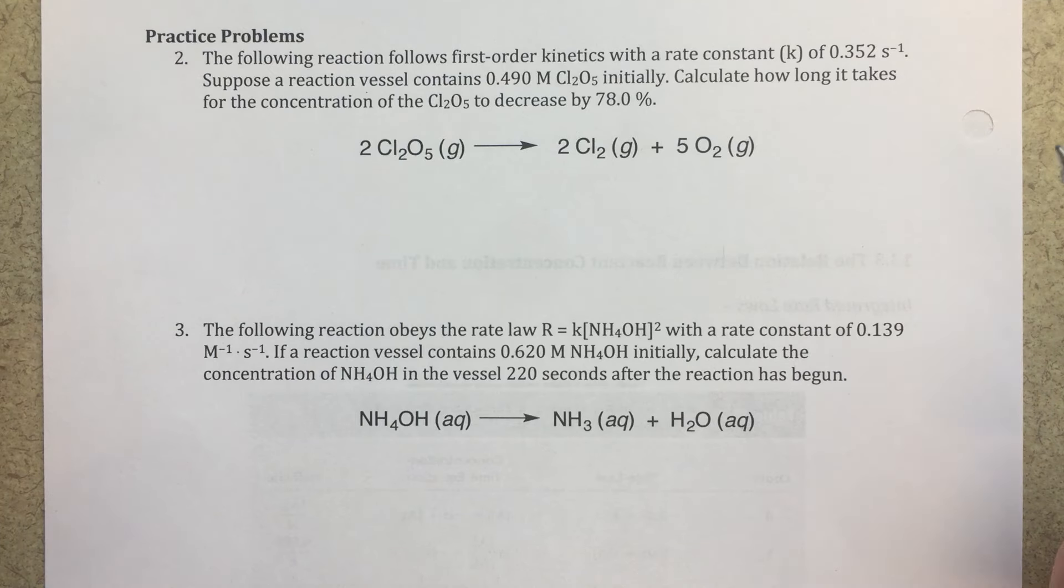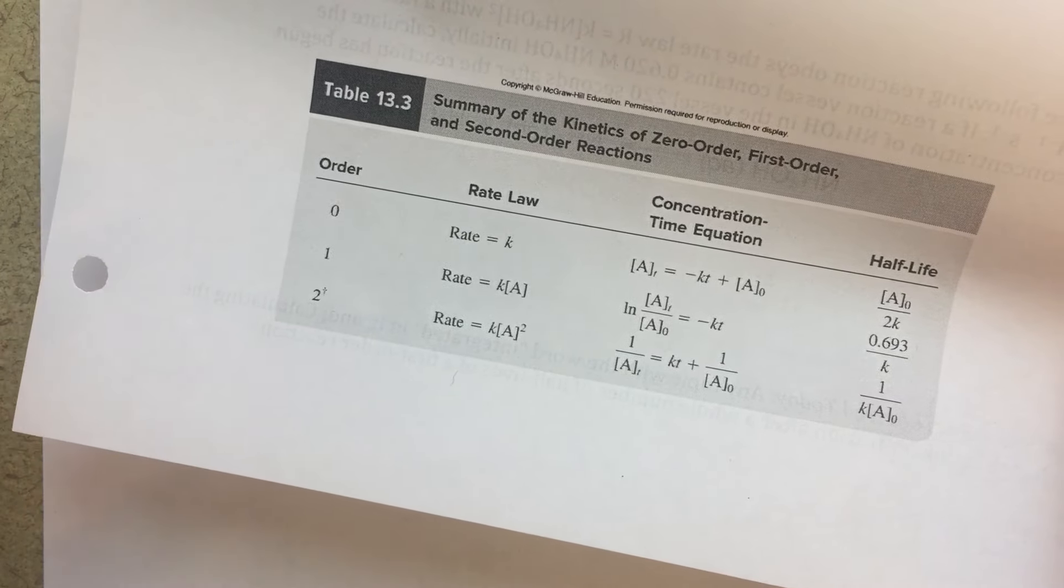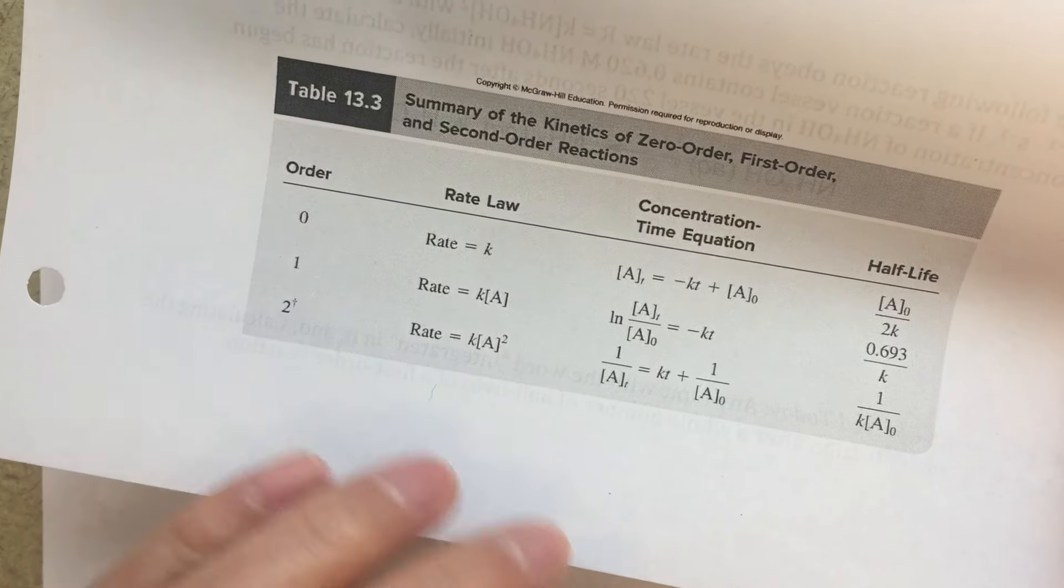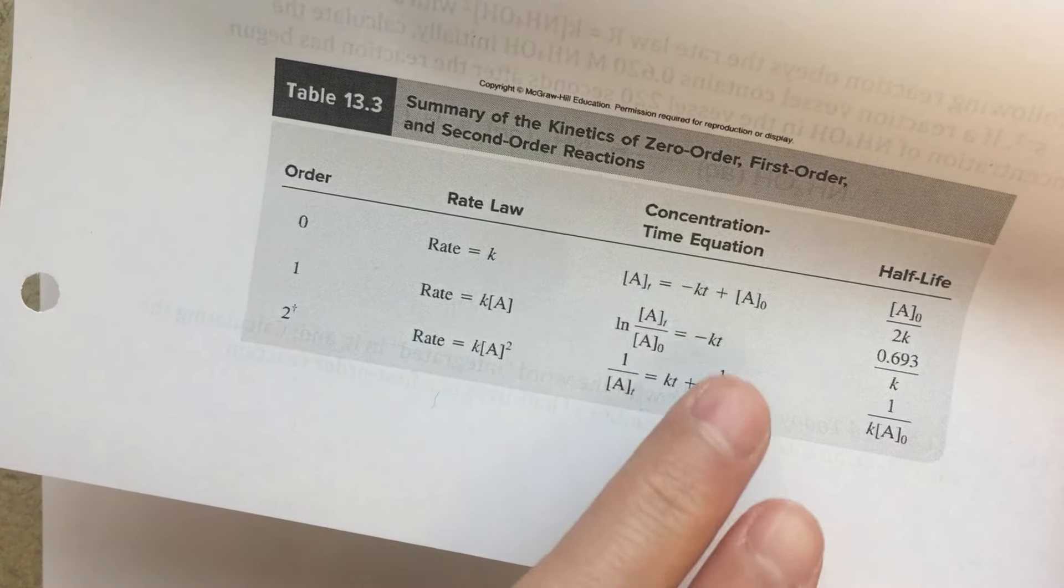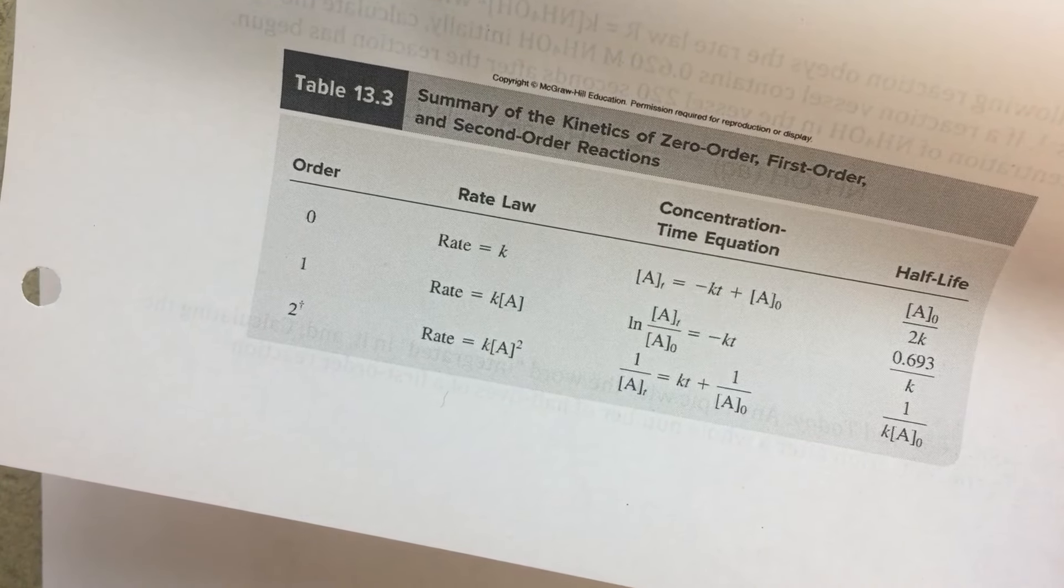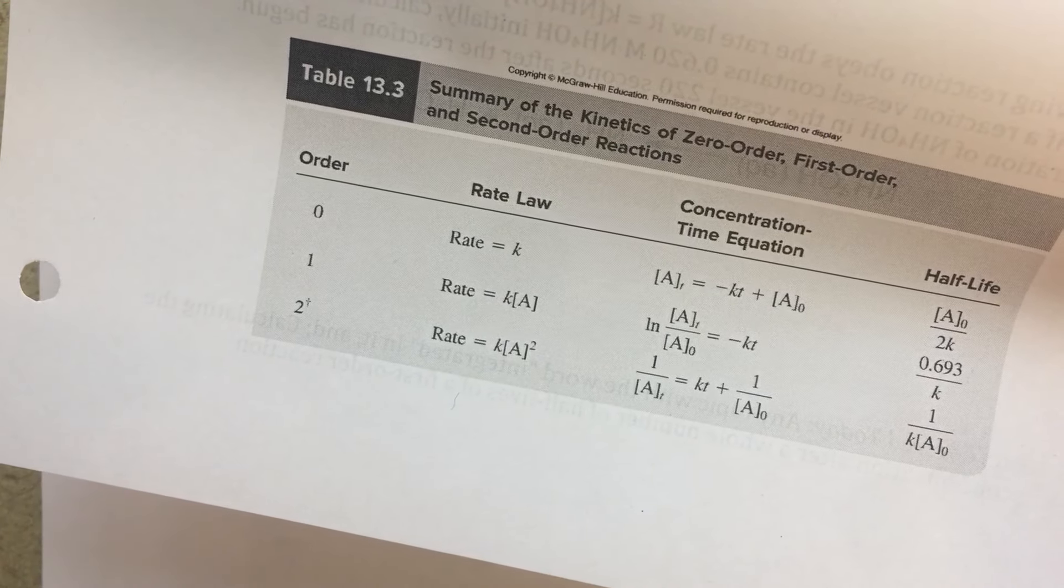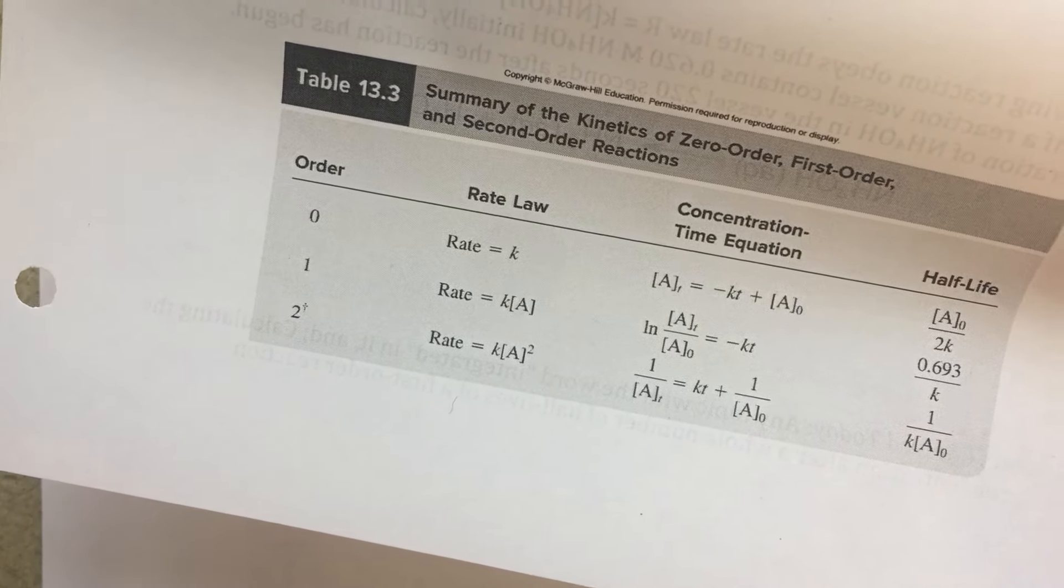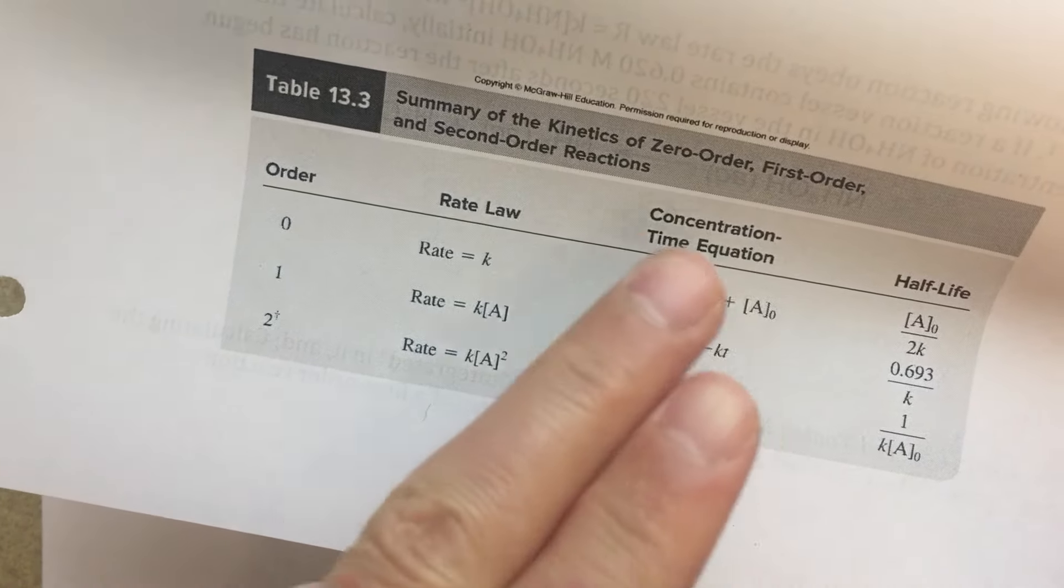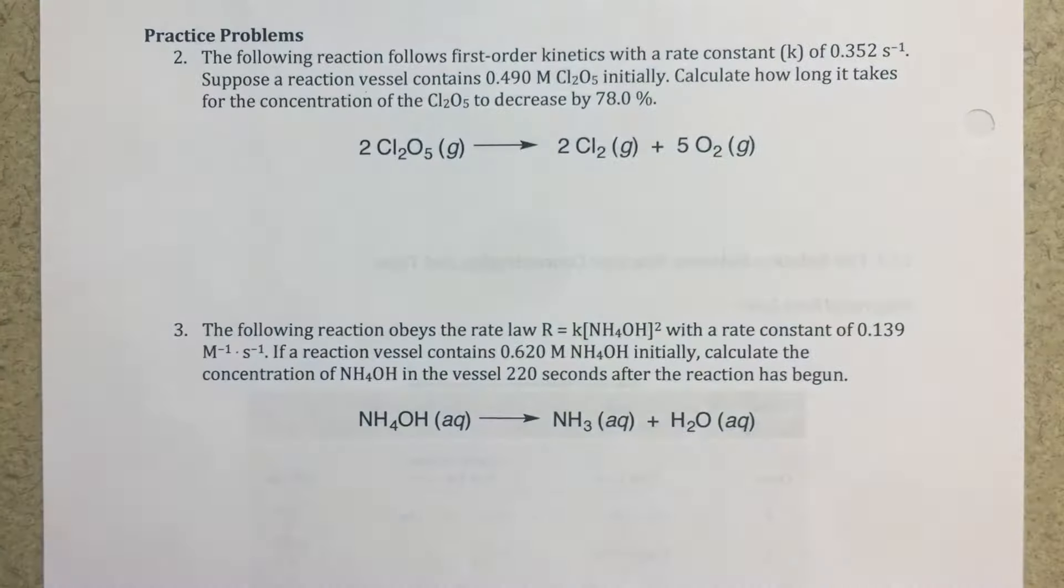So the first thing that I want to remind everyone of is this table of integrated rate laws. Here I've got my table, the different orders of reactions, the different rate laws that go along with those, and then these concentration time equations. These right here, those are the integrated rate laws. That's what we're going to be using in this problem. We've also got our half-life equations over here that we can use if we want to find the T1/2, how long it takes for half the material to go away. But for these problems, we're going to be using these concentration time equations or integrated rate laws. That's the key here.